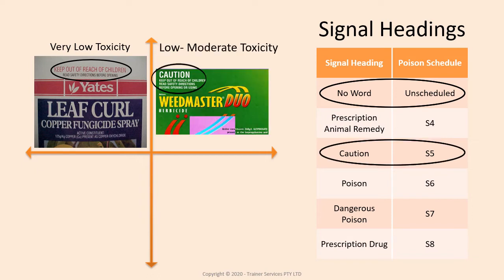If the first word at the top of the label is 'caution', then the concentrated chemical is considered to be a schedule 5 poison with a low toxicity. Common herbicides such as Roundup, as well as many household chemicals including cleaning agents and fly sprays, fall into this category.